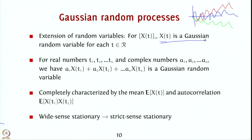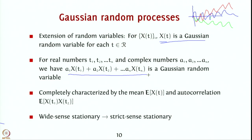For real numbers t1, t2, …, tn and complex numbers a1, a2, …, an: if we observe the random process at times t1 through tn and take the linear combination a1*x(t1) + a2*x(t2) + … + an*x(tn), and this is always a Gaussian random variable, then the process is said to be a Gaussian random process. So x(t1), x(t2), …, x(tn) form a jointly Gaussian random vector, which parallels the definition of jointly Gaussian random vectors.